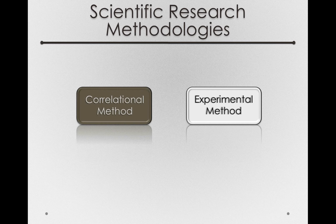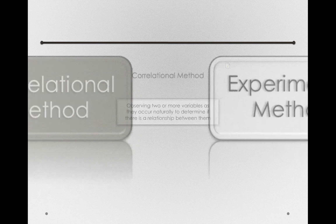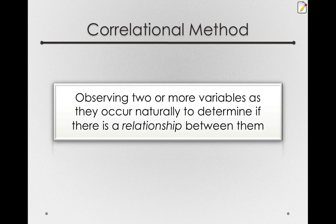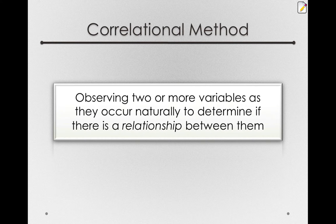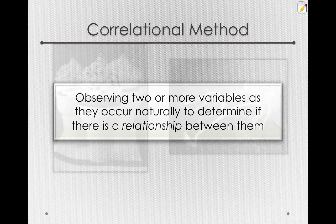Starting with correlational methods — these are methods in which we observe two or more variables as they occur naturally to determine if there is a relationship between them. For example, suppose we observe a number of different cities and look at their sales of ice cream and also their murder rate.